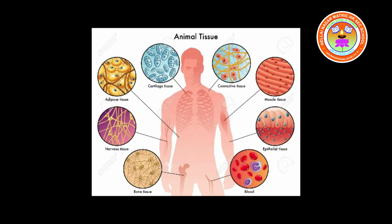Do you know how living organisms are made? They are made up of many cells which form a tissue, many tissues which form an organ, many organs together form an organ system, and finally these organs form an organism. The study of tissue is known as histology.